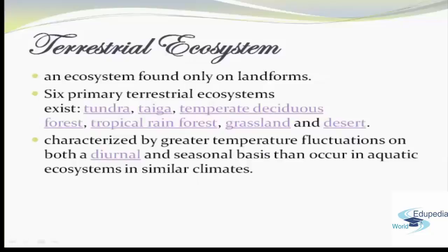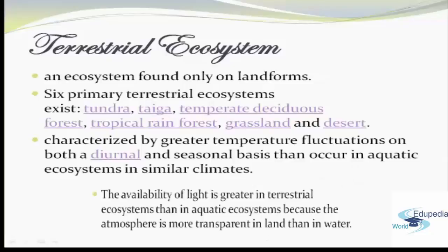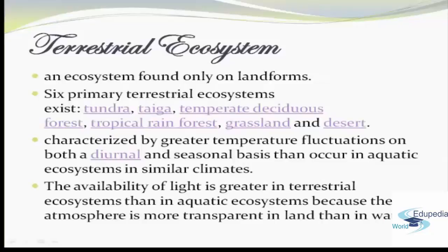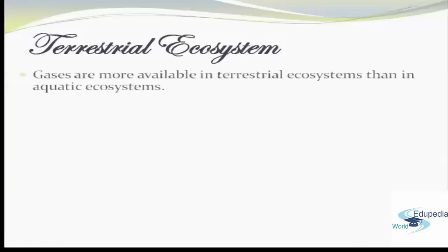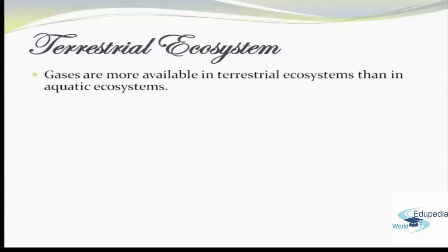Terrestrial ecosystems are characterized by greater temperature fluctuations on both annual and seasonal basis than occur in aquatic ecosystems in similar climates. The availability of light is greater in terrestrial ecosystems than in aquatic ecosystems because the atmosphere is more transparent on land than in water. Gases are also more available in terrestrial ecosystems than in aquatic ecosystems.